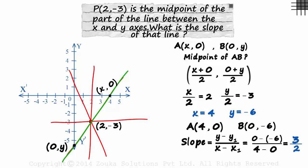Let's review what we did. First, we found out that this is the line the question is talking about. The endpoints of the segment are x comma 0 and 0 comma y, as we are told that it is the part of the line between the x and the y axis.